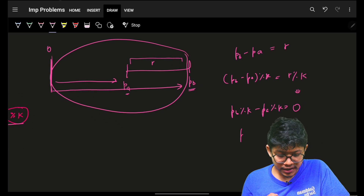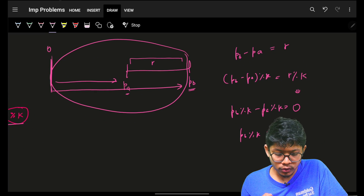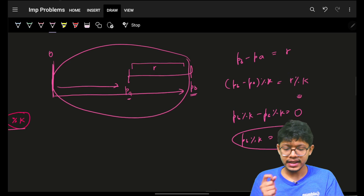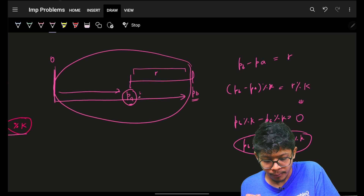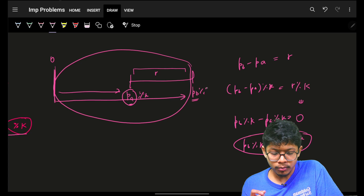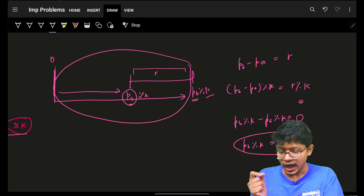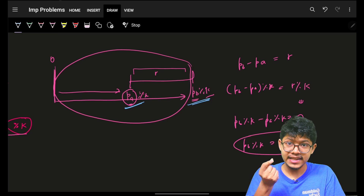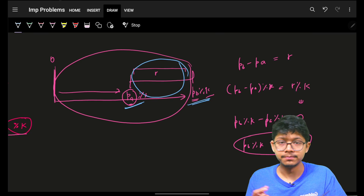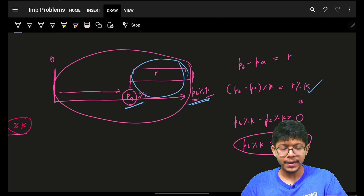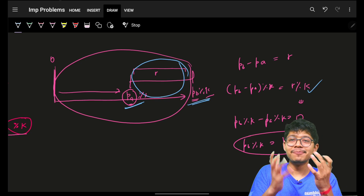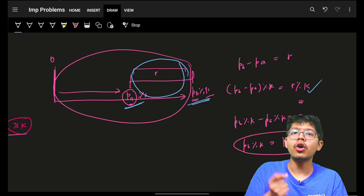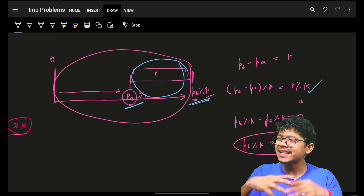I can infer that pb mod k equals pa mod k. If pa mod k and pb mod k are the same, I can say that range sum is divisible by k. This is the same key insight we repeat across nearly all continuous subarray problems — it's a very important approach.